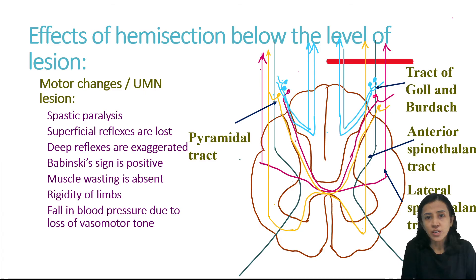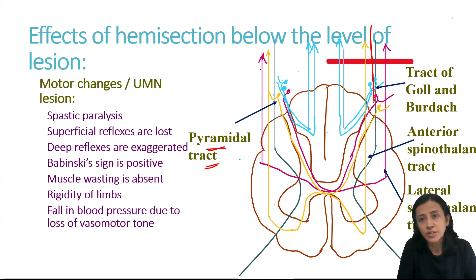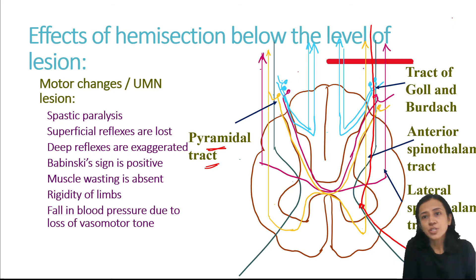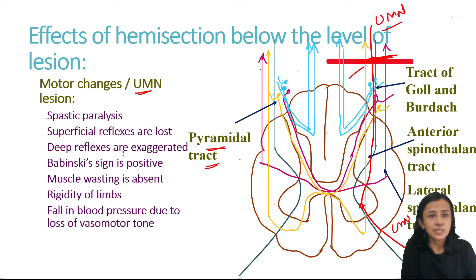For motor changes, the pyramidal tract on the same side is damaged, producing upper motor neuron lesion symptoms on the same side — spastic type of paralysis, loss of superficial reflexes, exaggerated deep reflexes, positive Babinski sign, absent muscle wasting, and involvement of groups of muscles. To summarize Brown-Séquard syndrome below the level of lesion: same-side motor loss is prominent (upper motor neuron type), while same-side sensory loss involves only fine sensations.